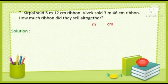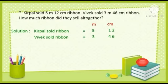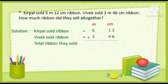The solution for this question: Kirpal sold ribbon equals 5 meter 12 cm. Vivek sold ribbon equals 3 meter 46 cm. The question is how much ribbon did they sell all together. The magic word here is 'all together,' so we have to add. Our final statement will be: Total ribbon they sold equals —